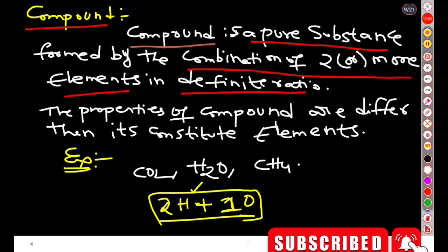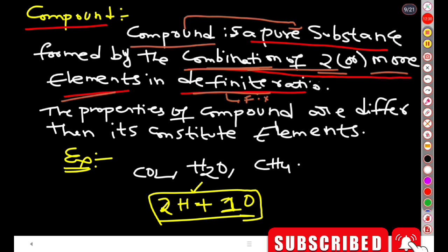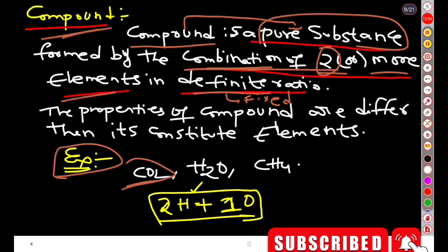The next one is compound. What is a compound? A compound is a pure substance. It is formed by a combination of two or more elements in a particular fixed ratio. For example, CO2 is carbon dioxide — it is formed from carbon and oxygen in a fixed ratio.